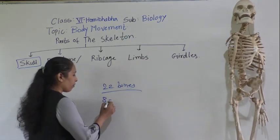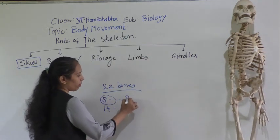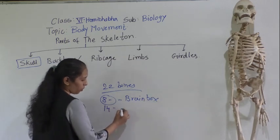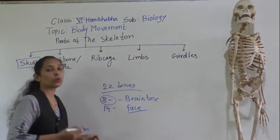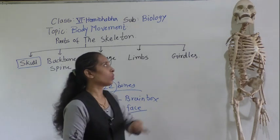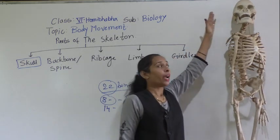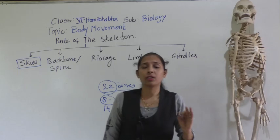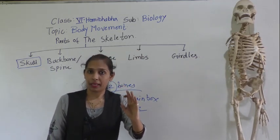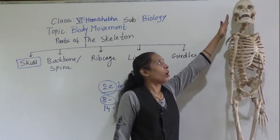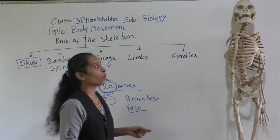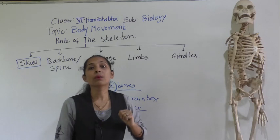So, eight bones form the brain box and the remaining 14 bones form and give shape to the face. Together, all 22 bones make up the skull, protecting the very delicate and important organ — the brain. All the bones forming the skull are fixed; they cannot move.